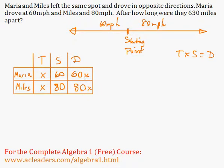Okay. So that's the distance that Maria drove and the distance that Miles drove. Now we know that they're 630 miles apart. So if she drove 60x and he drove 80x, they will get to 630 miles that way. Because she drove this way, he drove that way.